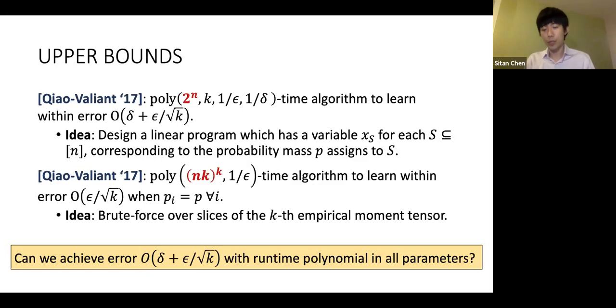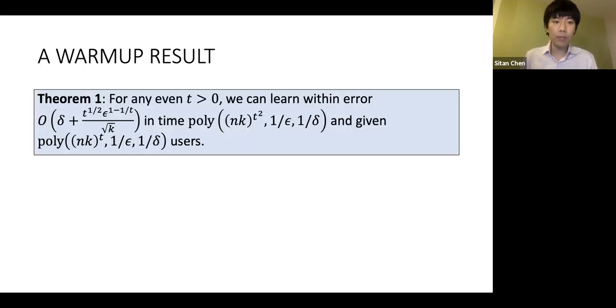The first result of this work, a warm-up to the techniques we use for other results, is that you can actually approach this information theoretic threshold of δ + ε/√k efficiently.